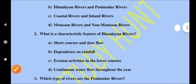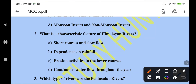What is the characteristic of the Himalayan River System? Options include: dependency on rainfall — no, it is not dependent on rainfall. Erosion activities in the lower courses — this is not correct. Continuous water flow through the year — yes, that is right. Throughout the year water flows continuously. So option D is correct.